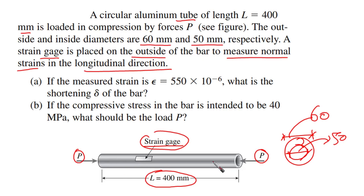Requirement (a): If the measured strain ε equals 550 × 10^-6, what is the shortening δ of the bar? We need to know the shortening of the bar.